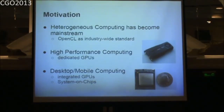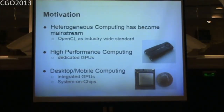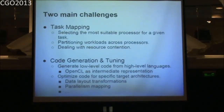Heterogeneous computing is really getting into the mainstream, but even though we have OpenCL as a language that allows us to program all these systems, it's not really meant to be used by mainstream programmers. It's quite a low-level language. So if you want to make these heterogeneous systems available to mainstream programmers, we basically have two main challenges.